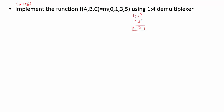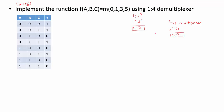Before seeing how to implement this function using a 1-to-4 demultiplexer, let us first review implementing it using a 4-to-1 multiplexer. The general form of a multiplexer is 2^n-to-1, which again gives n equal to 2, meaning 2 select lines. The truth table has 3 variables with 8 input combinations from 0,0,0 to 1,1,1. The output is 1 for minterms 0, 1, 3, and 5.